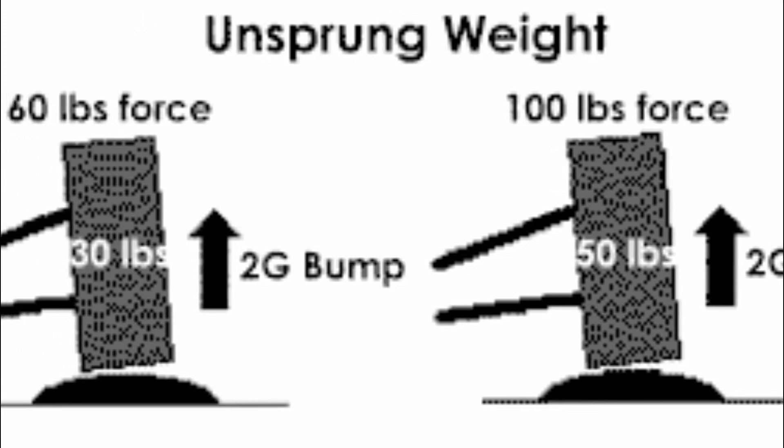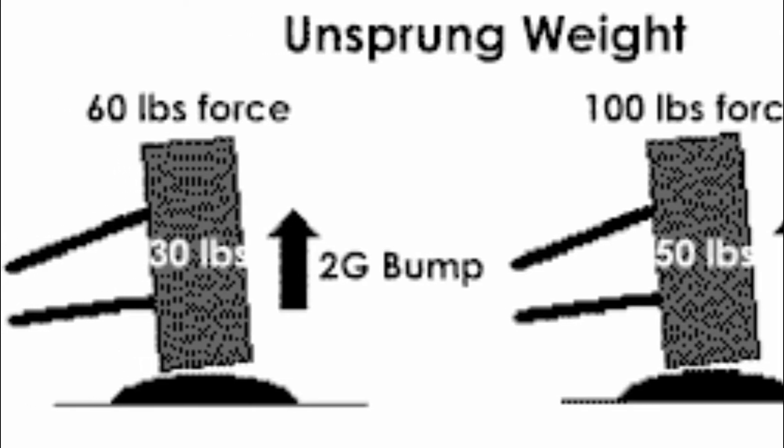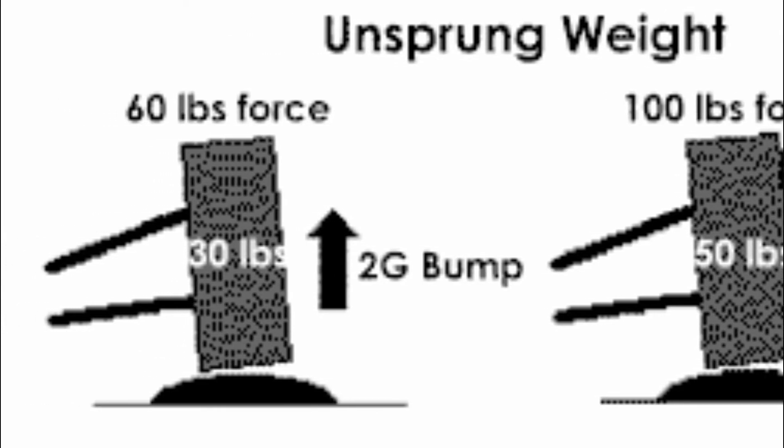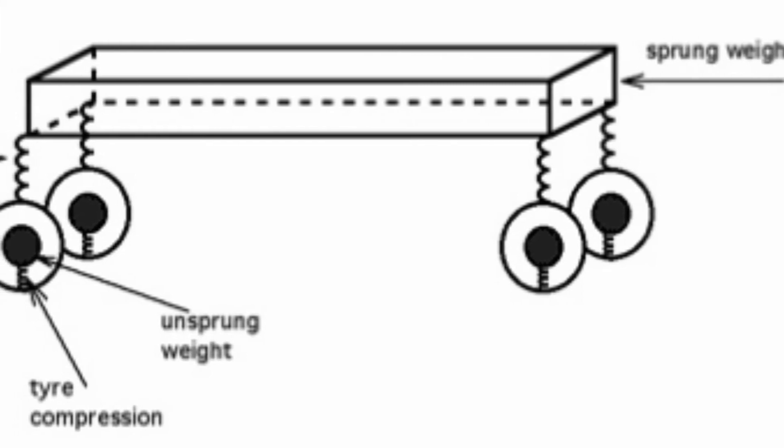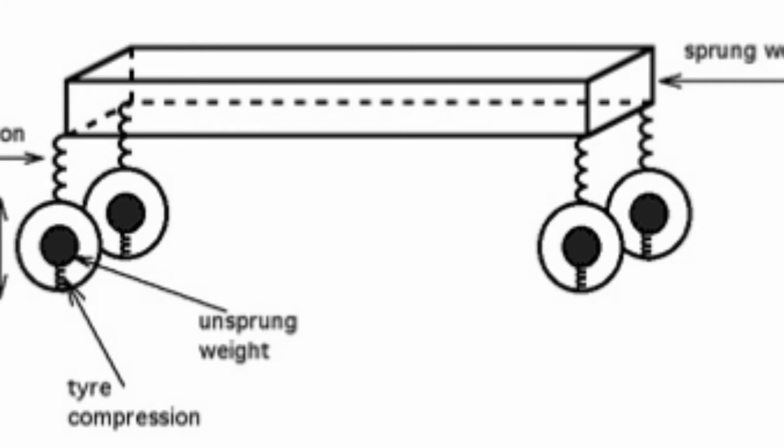A lighter wheel which readily rebounds from road bumps will have more grip and more constant grip when tracking over an imperfect road. For this reason, lighter wheels are sought especially for high performance applications.